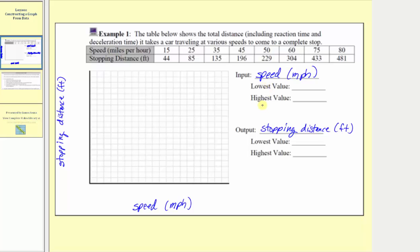Now we'll identify the lowest and highest value of the inputs and outputs, in order to help scale the horizontal and vertical axes. It's also helpful to recognize that the provided grid is a 20 by 20 grid. Now looking at the speed or the inputs, notice how the lowest value or smallest value is 15, and the highest value or largest value is 80. Looking at the outputs or the stopping distance, notice how the lowest value is 44, and the largest value is 481.